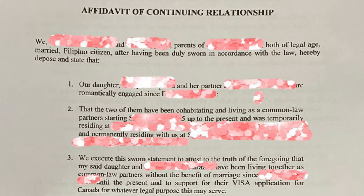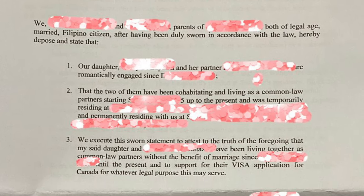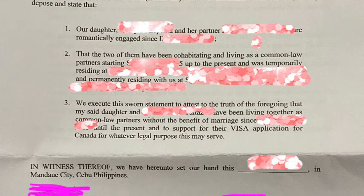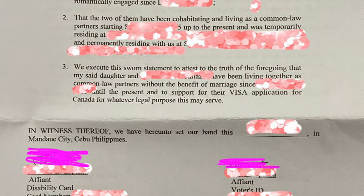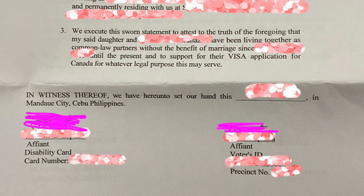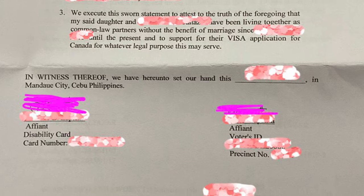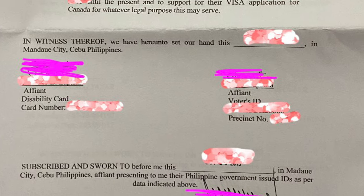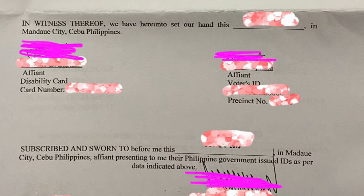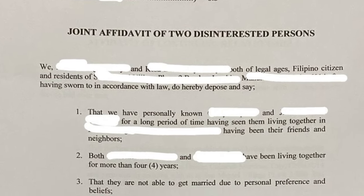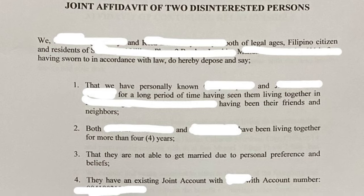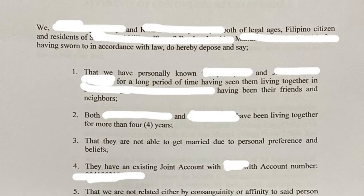An affidavit of relationship is a legal document including a sworn statement testifying to the nature of a relationship. You can let your friends or relatives testify to this affidavit — it is called a joint affidavit of two disinterested persons.